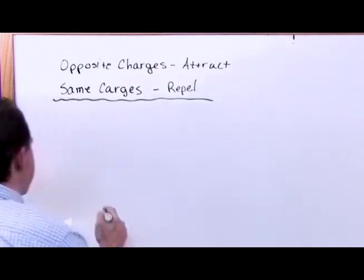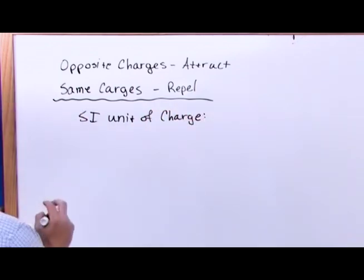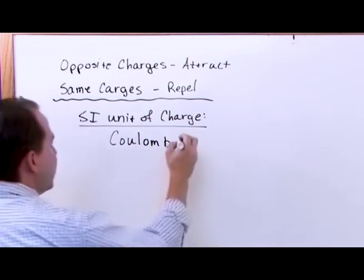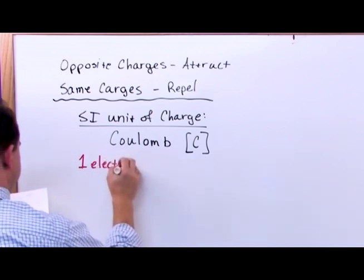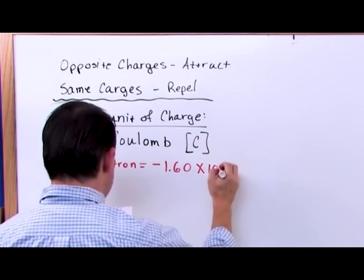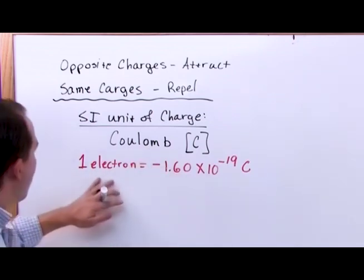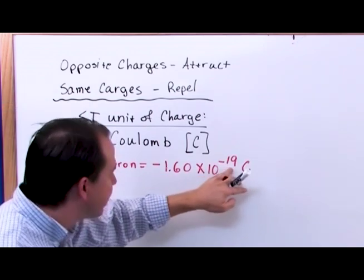So the details of charge: the SI unit of charge is called — very important that you know this — the coulomb. The unit for that is just the letter C. To give you an idea of what that is, one electron is equal to negative 1.60 times 10 to the negative 19 coulombs, because electrons are negative. You can see that a coulomb is a very large unit, because one little tiny electron is negative 1.6 times 10 to the minus 19 coulombs. That means a coulomb itself is a very large number — electrons are a very small fraction of that.